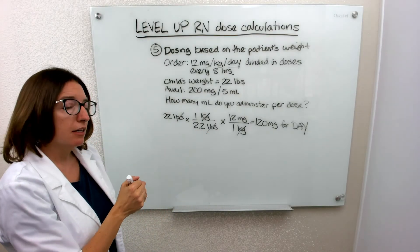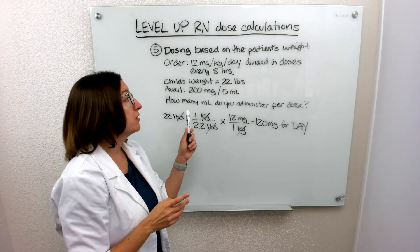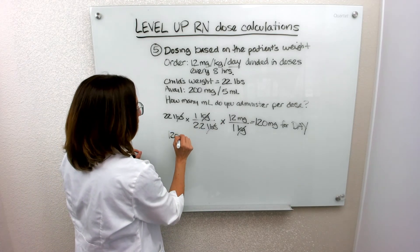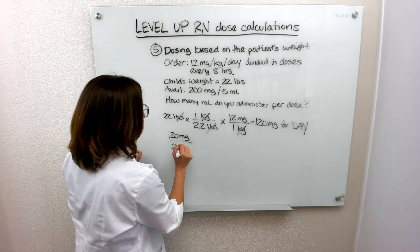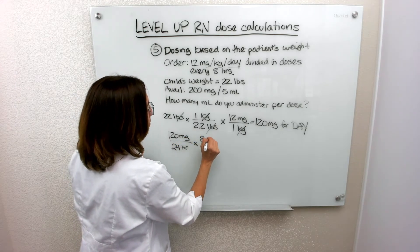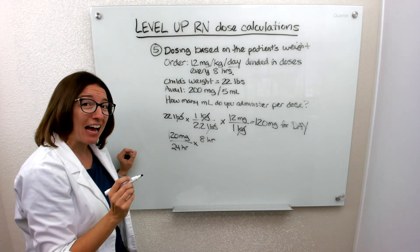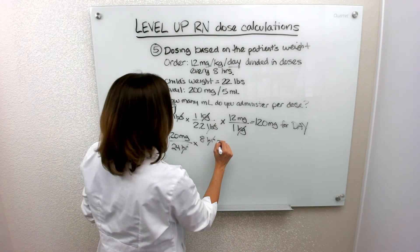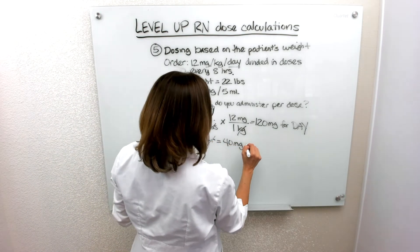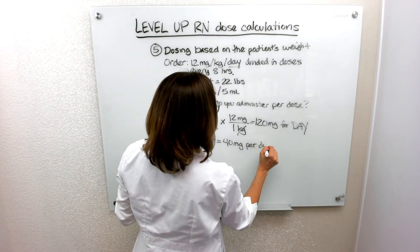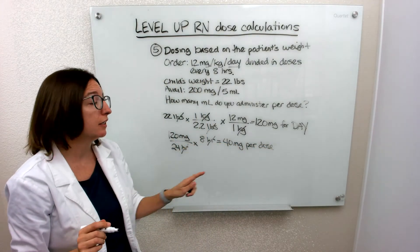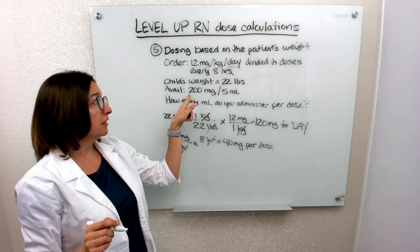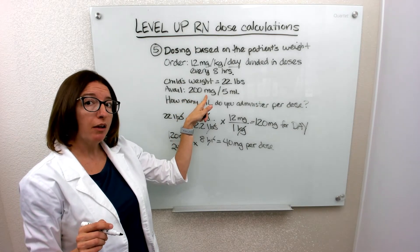Our question is per dose versus for the day, and we also need to know the milliliters. We're giving 120 milligrams over a 24-hour period, but we want to know how much to give every eight hours because that's what's ordered. So we divide by 24 hours and multiply by 8 hours per dose — the hours cross off — and we end up with 40 milligrams per dose.